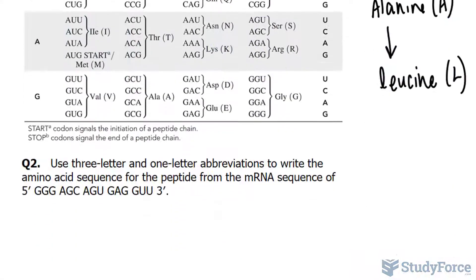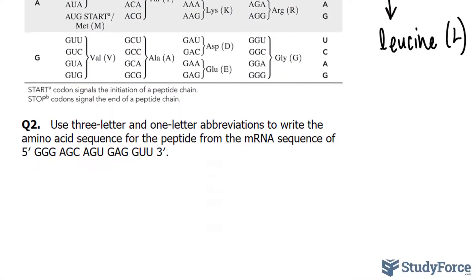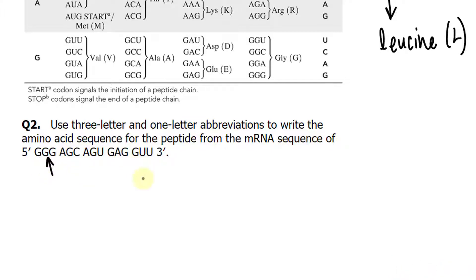Let's do the same thing now for question two. Use the three-letter and one-letter abbreviations to write the amino acid sequence for the peptide from the mRNA sequence found underneath. This time we have five amino acids: one, two, three, four, five.